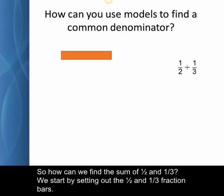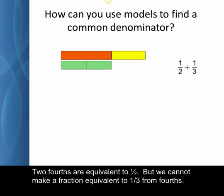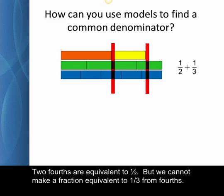So how can we find the sum of one-half and one-third? We start by setting out the one-half and one-third fraction bars. We need to find equivalent fractions for both with a common denominator. Can we use fourths? Two-fourths are equivalent to one-half, but we cannot make a fraction equivalent to one-third from fourths.